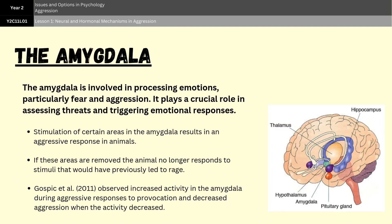The amygdala is responsible for quickly evaluating the emotional importance of sensory information and prompting an appropriate response to that information. Research has shown that if certain areas of the amygdala are stimulated electrically, an animal will respond with aggression — for example, snarling or adopting an aggressive posture.